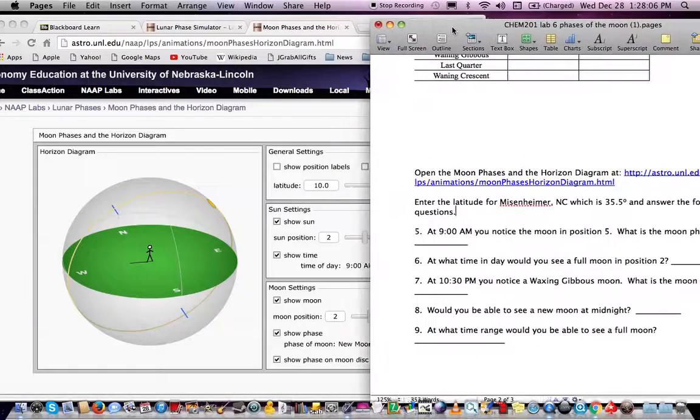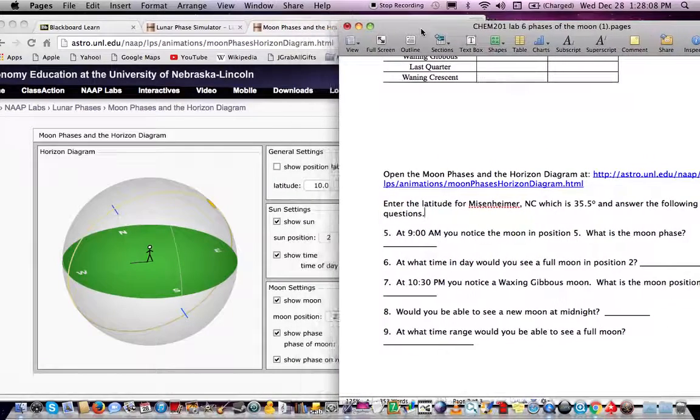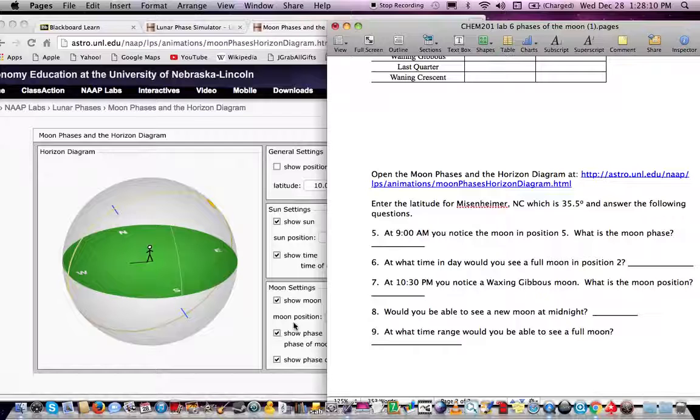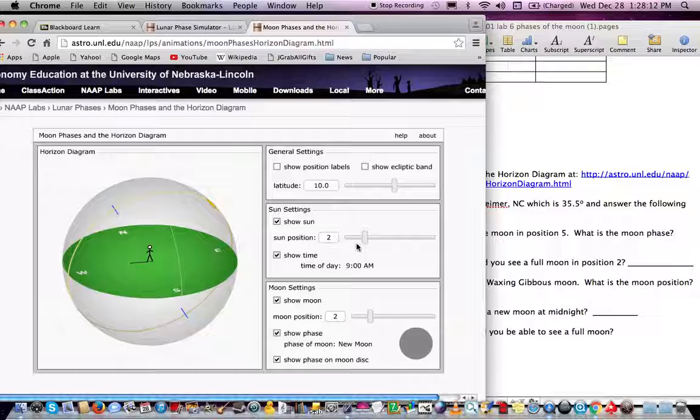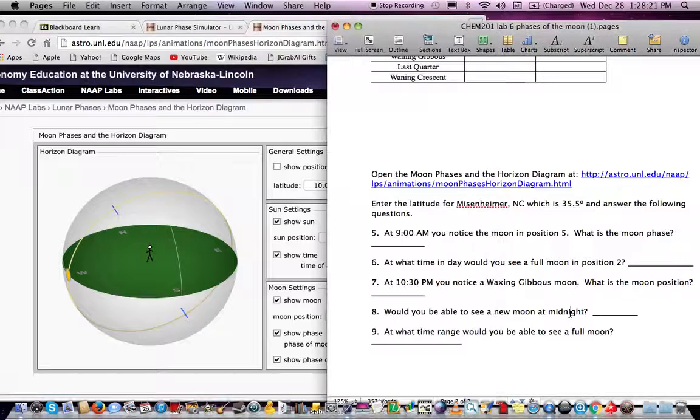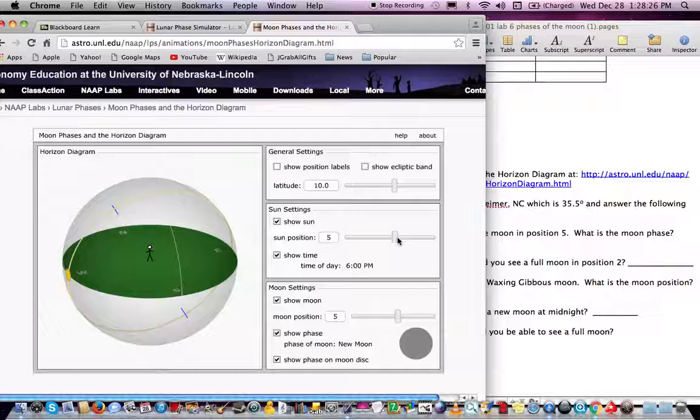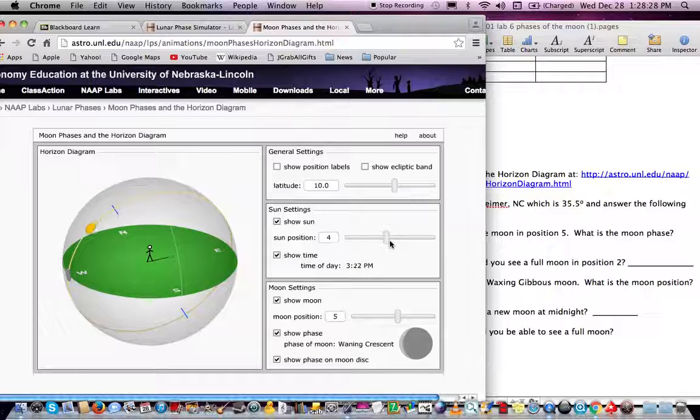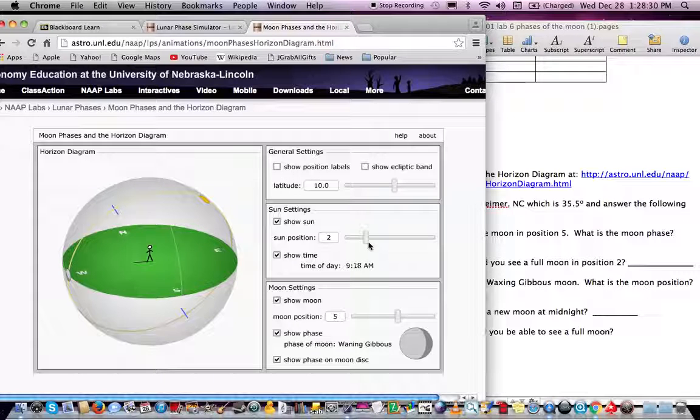And the first question it asks is, at 9 a.m., you notice the moon in position 5, what is the moon phase? So what you can do, I'm going to move this to a different time, just for kicks, but let's say we put 5 in here for the moon position, and it says at 9 a.m. So what we can do is we can move this to the time we want, we can move to 9 a.m., and we can see what phase the moon would be. In this case, it would be waning gibbous at 9 a.m.